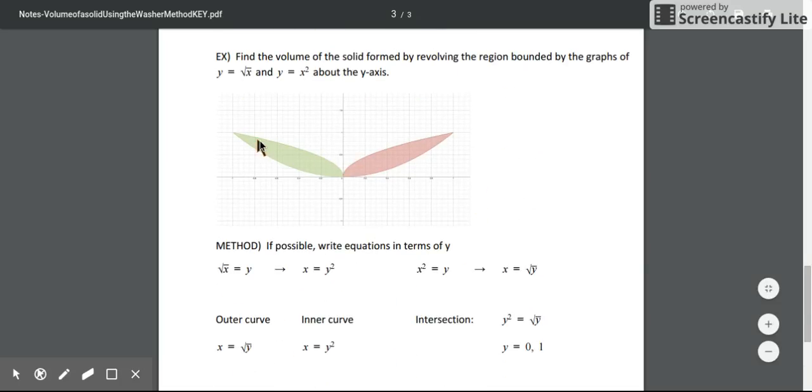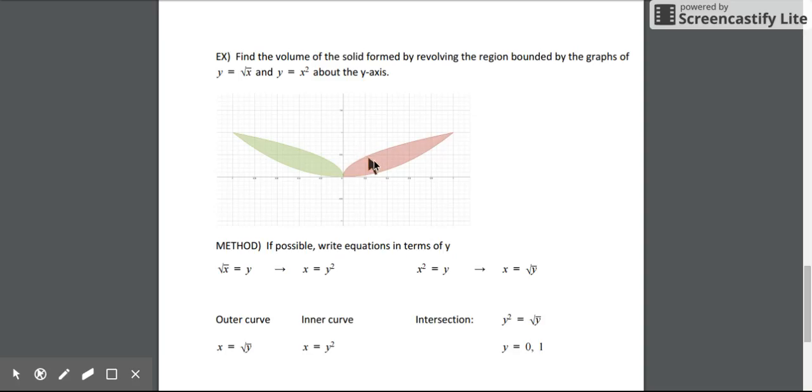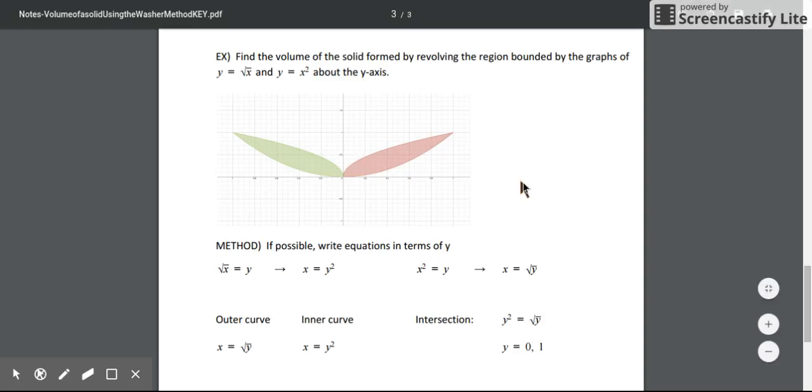So again, we're using the washer method because we have this gap in between our graphs. We want to take care of that hole that's being created and not include that hole in our resulting volume. So we use the washer method rather than the disk method to get a more accurate representation of the volume created when that shape gets spun.